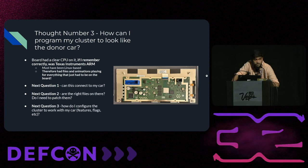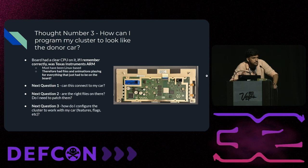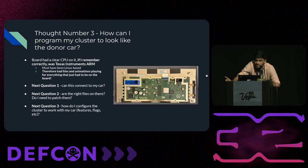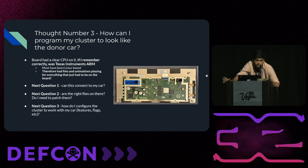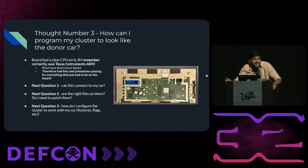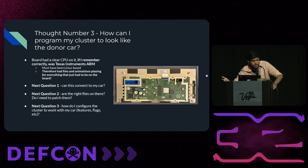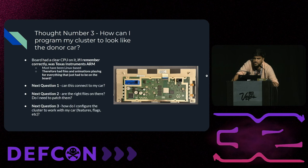The first thing I did with this cluster was pop the back of it. There's a Texas Instruments ARM CPU in there — it's Linux-based basically, so I'm looking at PNG files and all those graphics. Pretty straightforward at that point. But the next three questions I had were: one, can this cluster connect to my car? Two, are the right files on there, or do I have to somehow patch them to get the right gauge cluster to show up? And three, how do I configure the cluster to work with my car and my specific feature set?